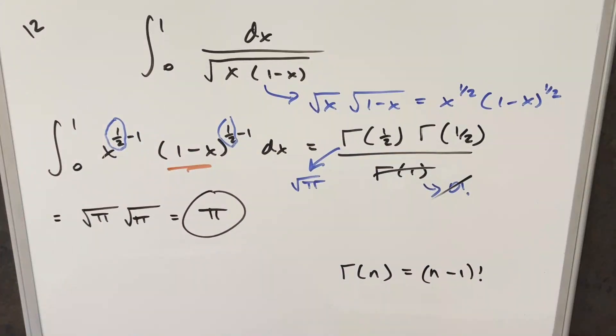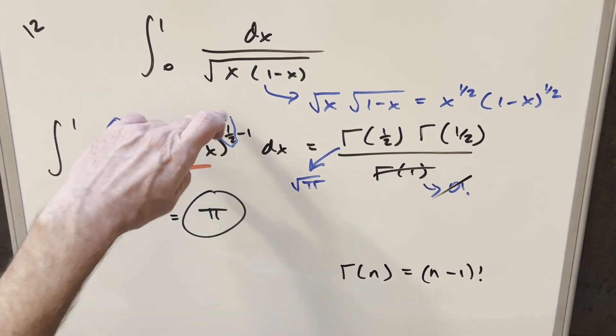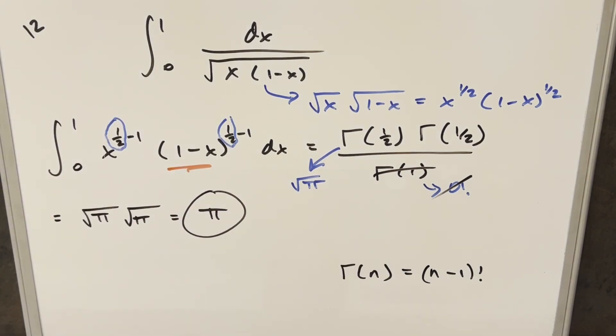So there you go, a really quick and easy one with the beta function. You can kind of just do this in your head if you can just rearrange it and see that it's going to be 1 half and 1 half and gamma of 1 in the denominator. Thanks so much for watching today. Have a good day.